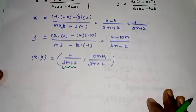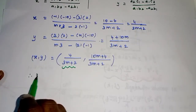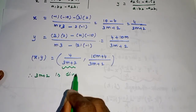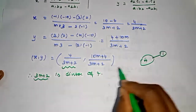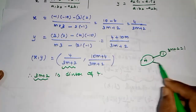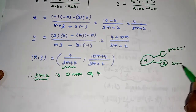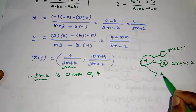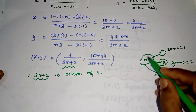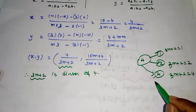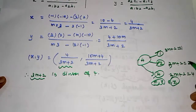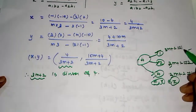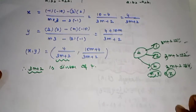Now, looking at the x-coordinate: for 4/(3m+2) to be an integer, (3m+2) must be a divisor of 4. The integer divisors of 4 are: +1, −1, +2, −2, +4, −4 — six options to choose from for x.